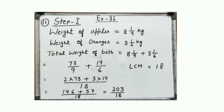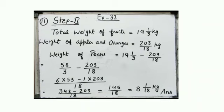When you solve it, the total weight of apples and oranges comes to 203/18 kg. If we subtract this from the total weight, we will get the weight of pears. That is Step 2.